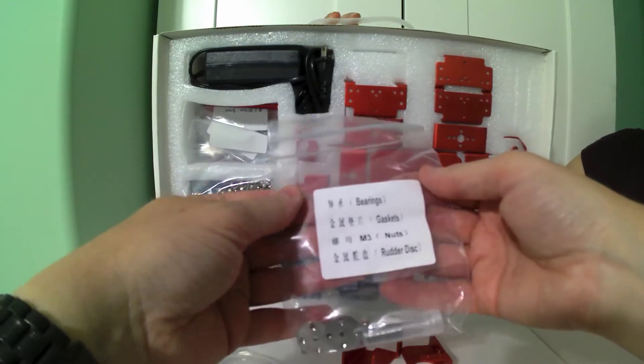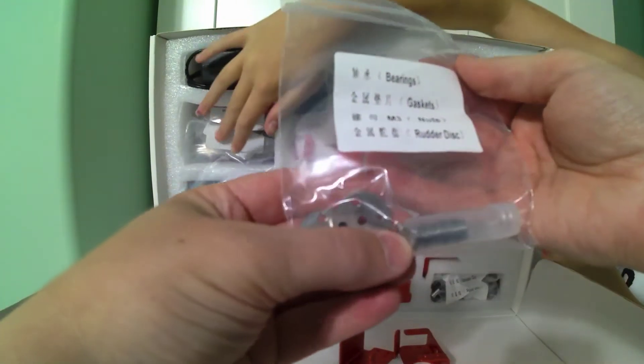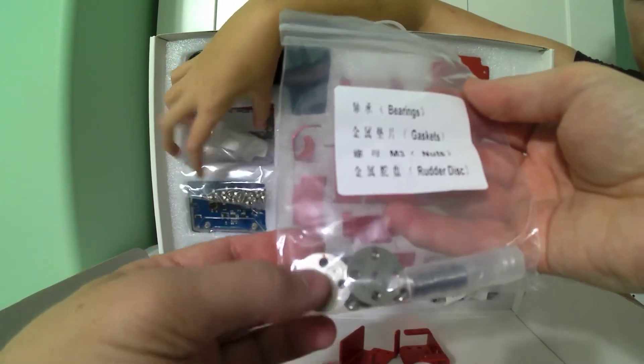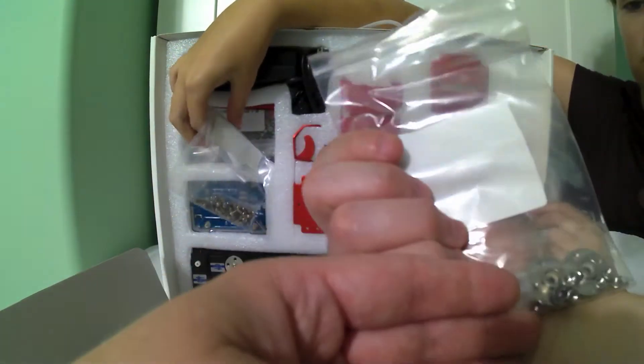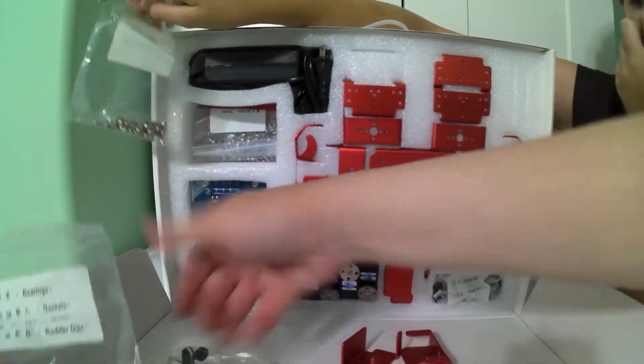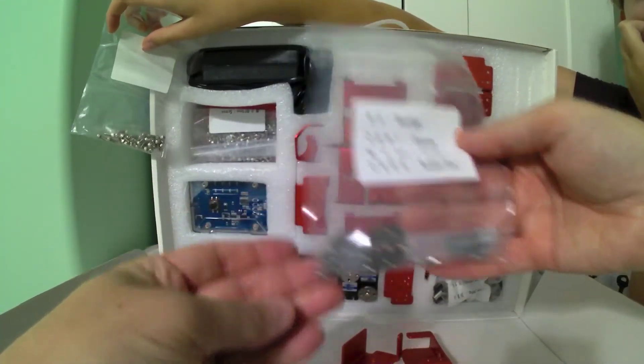We've got some ball bearings to help it turn easier. We've got some gaskets, some nets, and some extra little rudder discs. These are the same discs that you see down here on the servos. Because the last two don't have them on there, so we've got two here if they're needed.